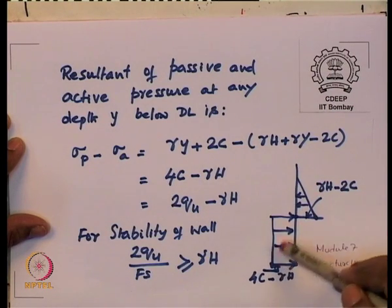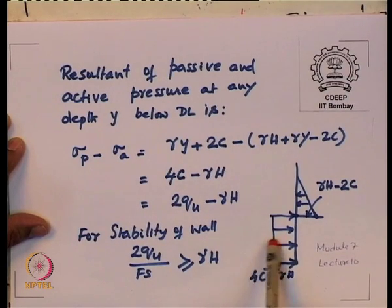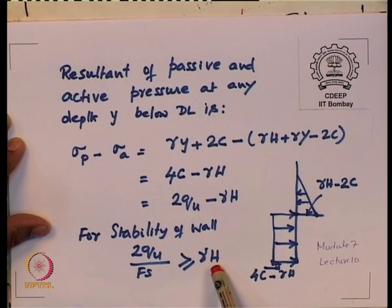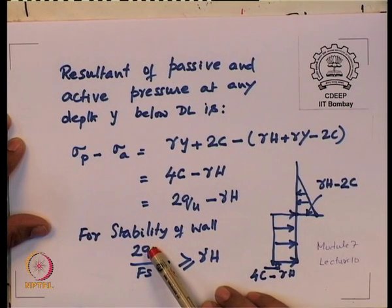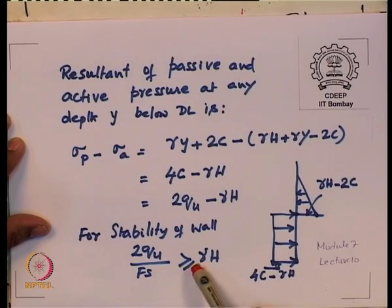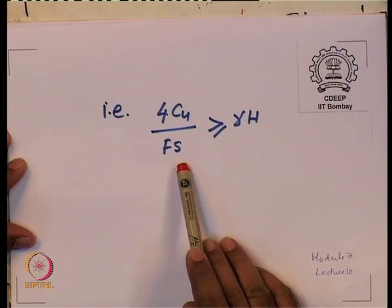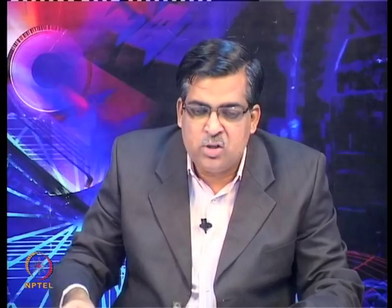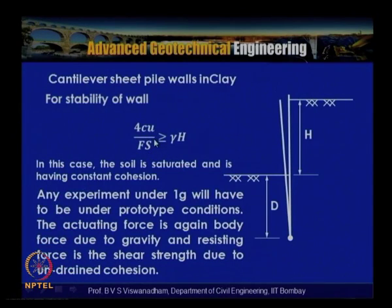For stability of the wall, comparing pressures on both sides: 2q_u divided by factor of safety must be greater than or equal to gamma h. This is the key expression for determining whether centrifuge tests are required: q_u divided by factor of safety must be greater than or equal to gamma h. This is obtained from the net pressure diagram considering active and passive sides below the dredge level. The c_u divided by gamma h term appears — similar to slopes in clay.